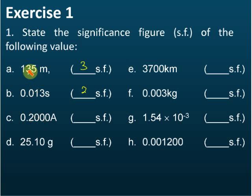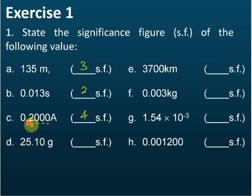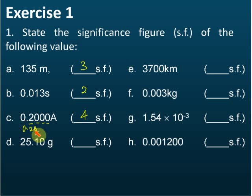C — the answer is 4. Four significant figures: 1, 2, 3, 4. So the zero — if there's a decimal point here, the zero afterwards is significant. So if there are 2 significant figures, then we should write 0.20. This is 2 significant figures. This is 4 significant figures.